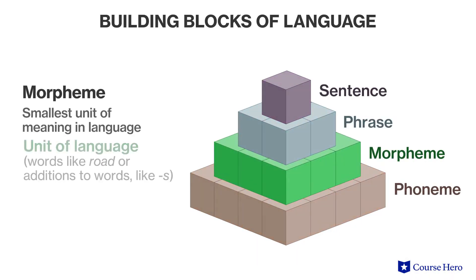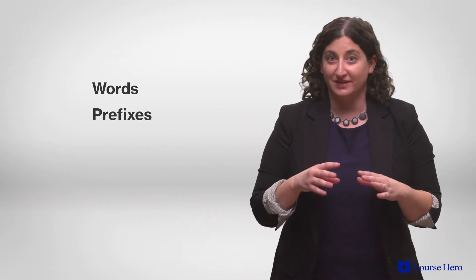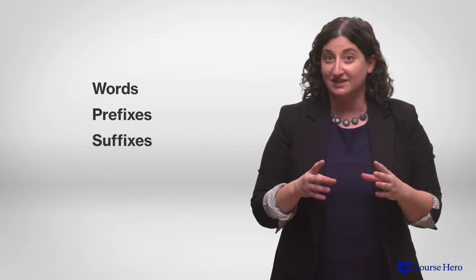The English language consists of 26 letters in the alphabet that contribute to 44 phonemes. Next up are morphemes, the smallest units of meaning in language. In English, adding 's' to the end of most nouns indicates that it is plural, so this level can include words, prefixes, and suffixes.